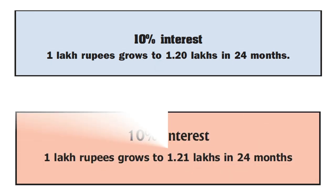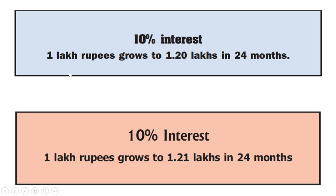Look at the ads of two banks. The first offers 10% interest — 1 lakh rupees grows to 1.20 lakhs in 24 months. The second also offers 10% interest — 1 lakh rupees grows to 1.21 lakhs in 24 months. Both banks give interest at the same rate, but if the same amount is deposited for the same period of time, how come the amounts got are different?